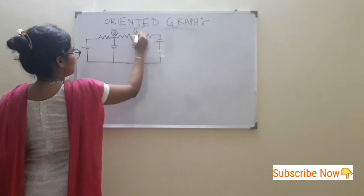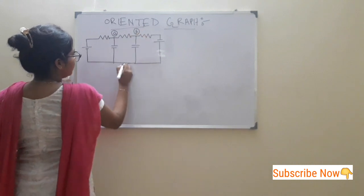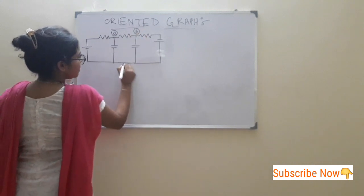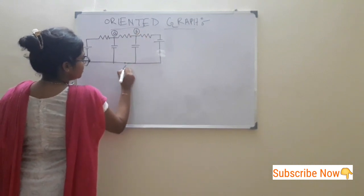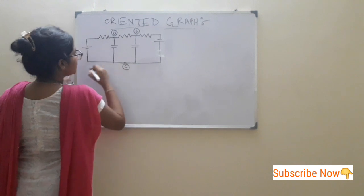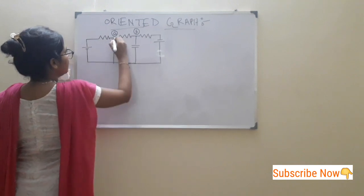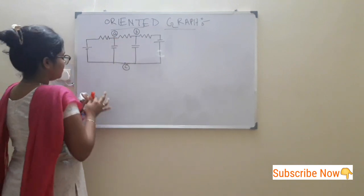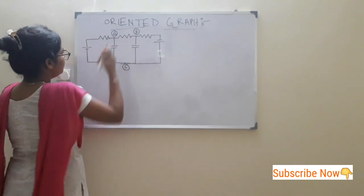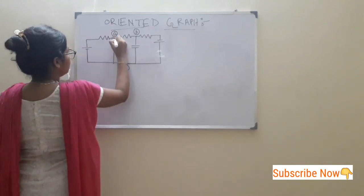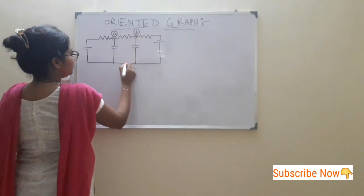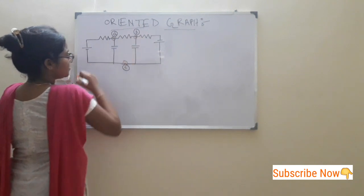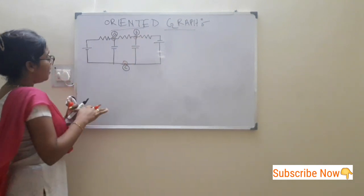This is node B. Here we are taking another node. This is node C. That means this is a node, this is a node, this is a node, and this one is a node.